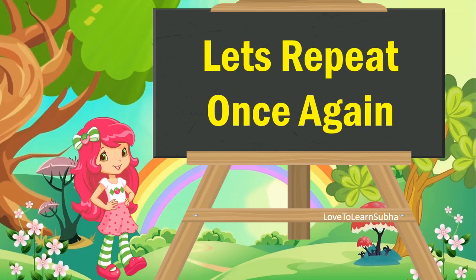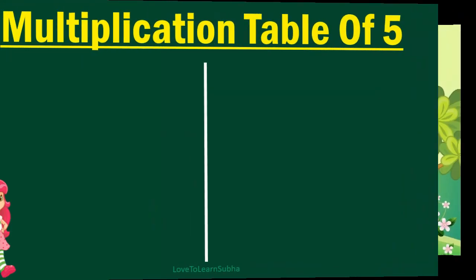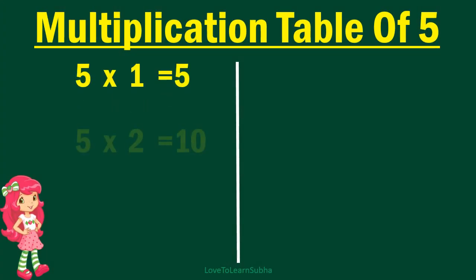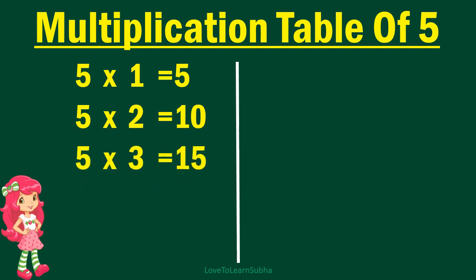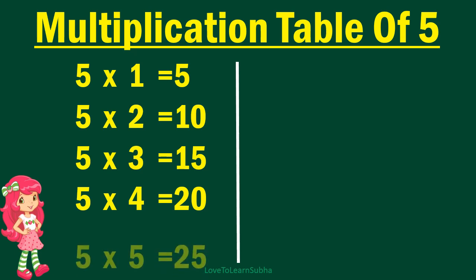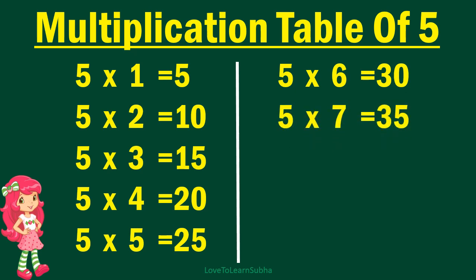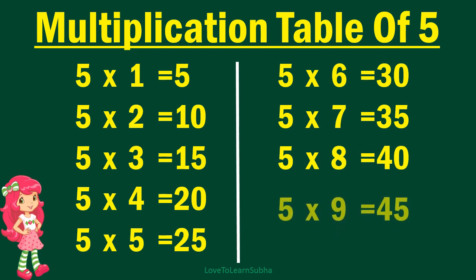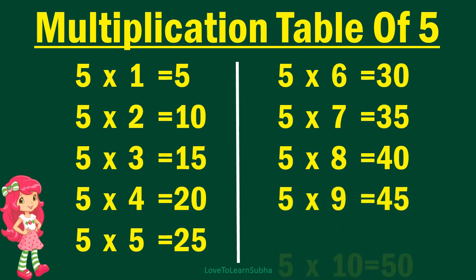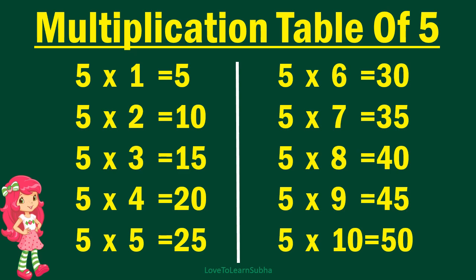Now let's repeat it once again. 5 1's are 5. 5 2's are 10. 5 3's are 15. 5 4's are 20. 5 5's are 25. 5 6's are 30. 5 7's are 35. 5 8's are 40. 5 9's are 45. 5 10's are 50.